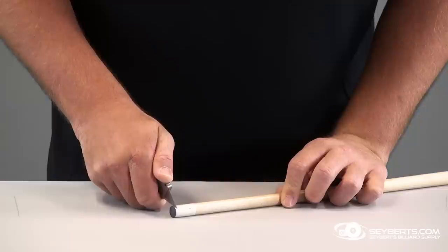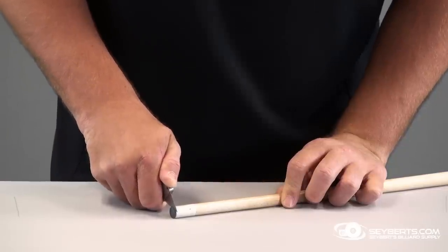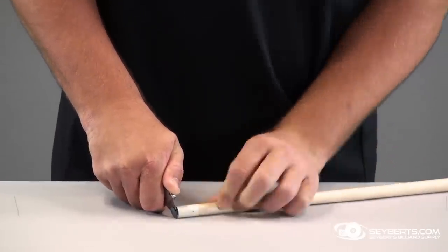First thing you want to do is cut the old tip off as close to the ferrule as you can without actually getting into the ferrule.